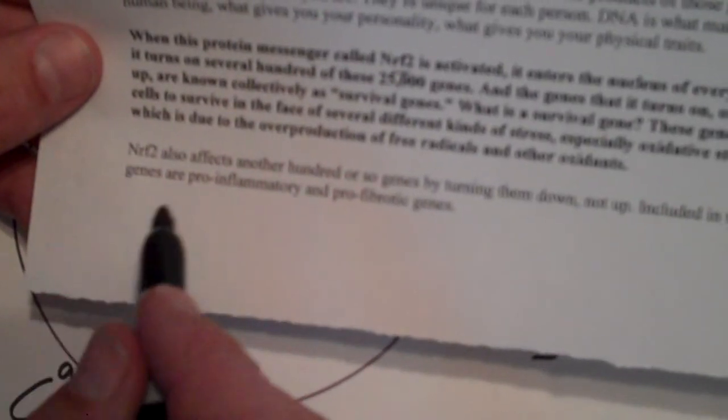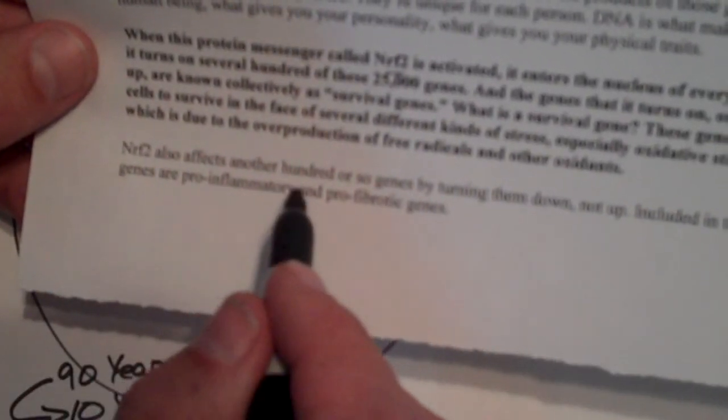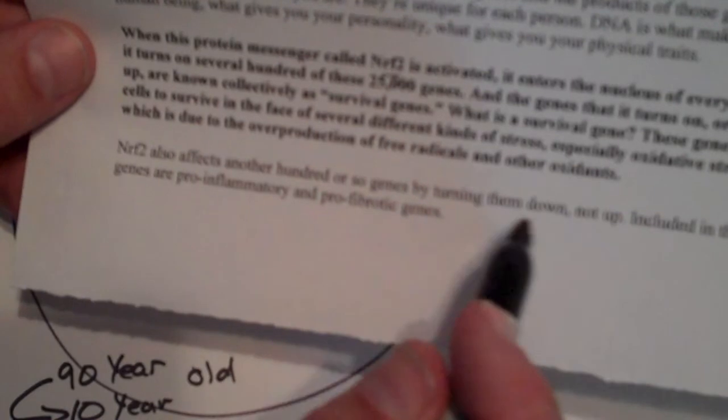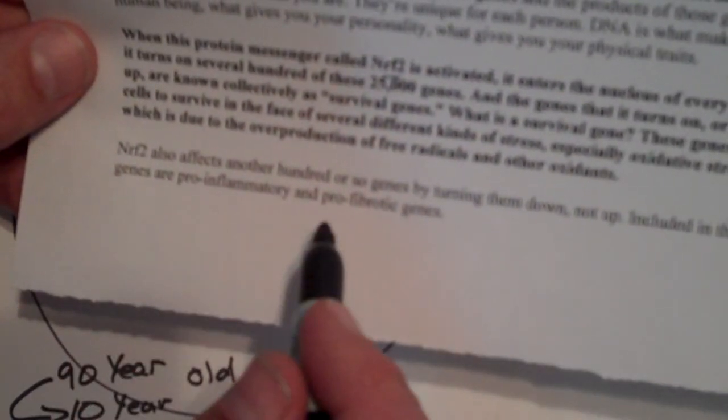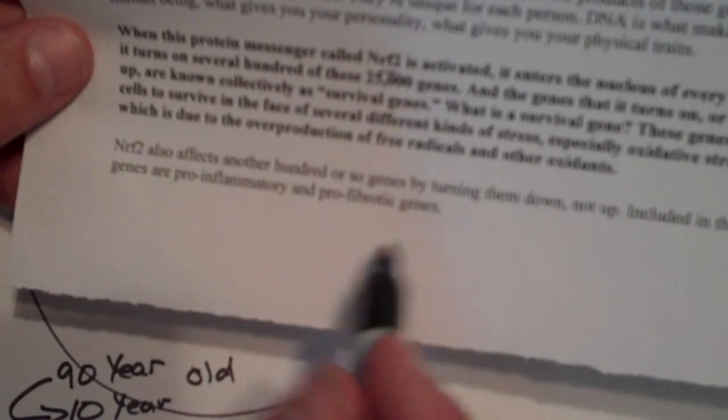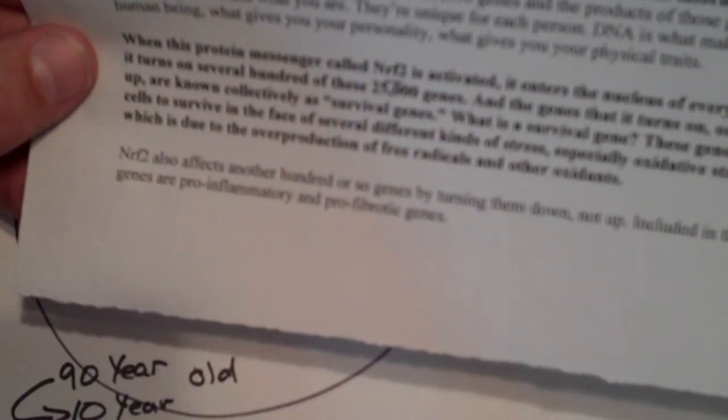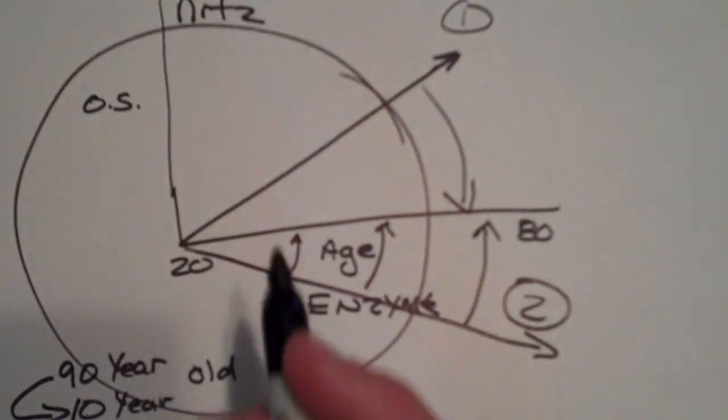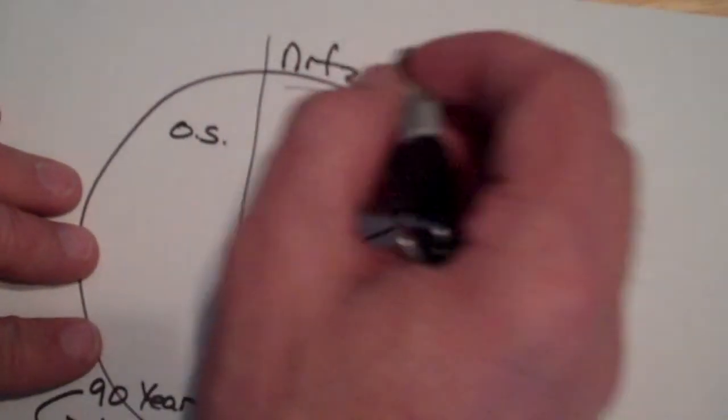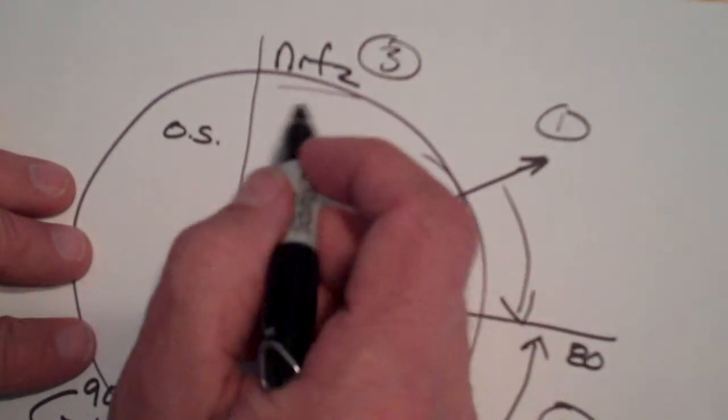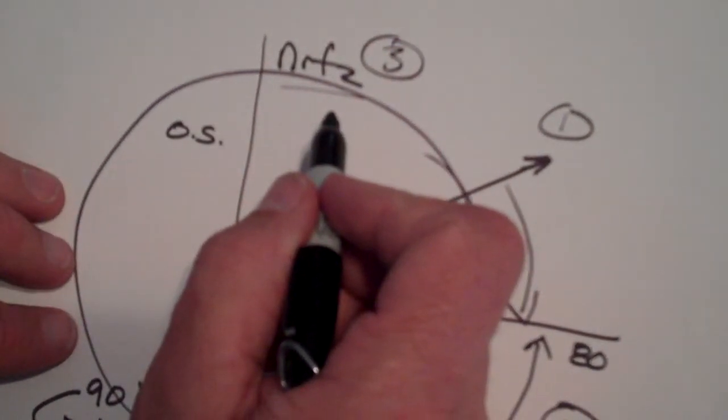And then Nrf2 is doing something else, right here. It's affecting several hundred other genes by turning them down, not up. These include genes that are pro-inflammatory and pro-fibrotic genes. So it's turning those genes down, and we all know what a problem inflammation is. And so Nrf2, this is the third thing that this is doing, by activating the Nrf2 pathway in the human body and in a mammal's body.